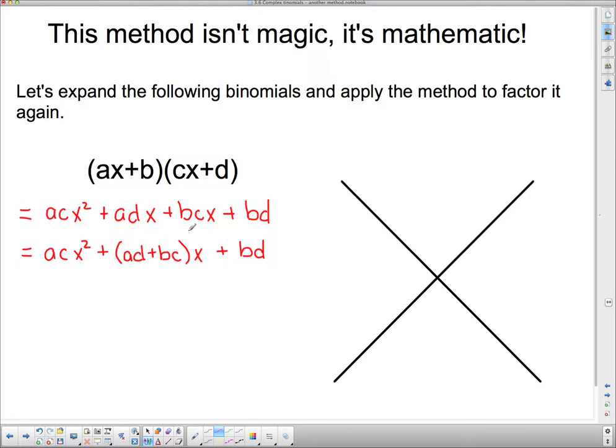And so here's our trinomial that we're going to try and put back into these two binomials using the bottoms up approach. Remember, the first step of the bottoms up approach was to take the coefficient of x squared and multiply it by the constant term. So what we're going to get is acbd.